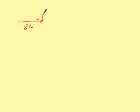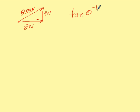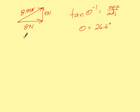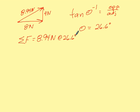That tells us the magnitude, but we still have to find the direction. We've got a magnitude of 8 newtons to the right and 4 newtons upward, and a resultant magnitude of 8.94 newtons. To find the direction, we use inverse tangent of the opposite over adjacent, giving us an angle of 26.6 degrees. So the resultant force equals 8.94 newtons at 26.6 degrees.